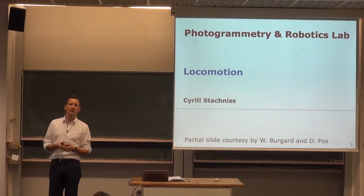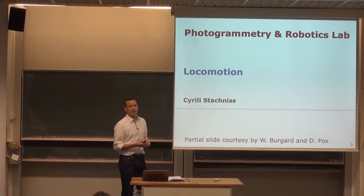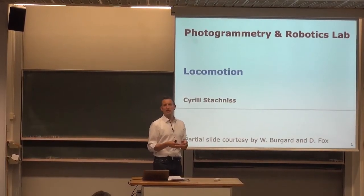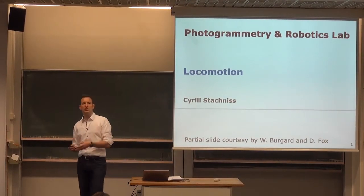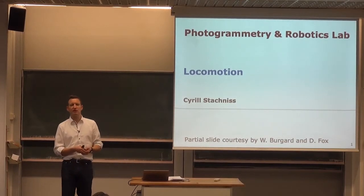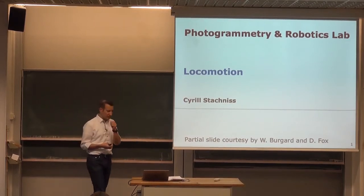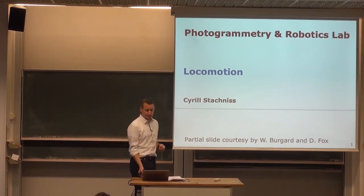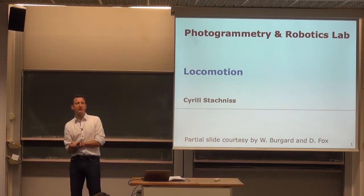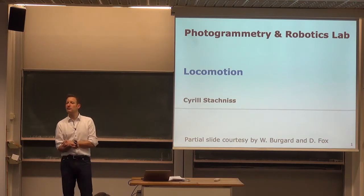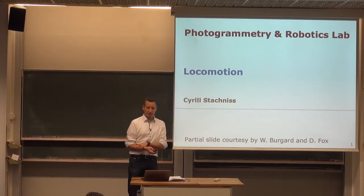After we have derived the basic physics equations, we can think about how to describe motion in probabilistic form so that we can take uncertainty into account. This will eventually lead us to state estimation problems where we want to fuse locomotion information and sensor information to estimate the pose of a mobile platform in the environment in an online fashion. Today we will focus on locomotion and revisit some basic physics to describe how a wheeled platform can move through the environment.